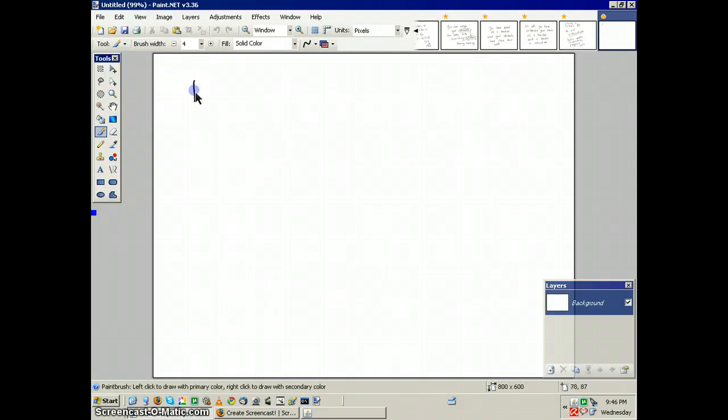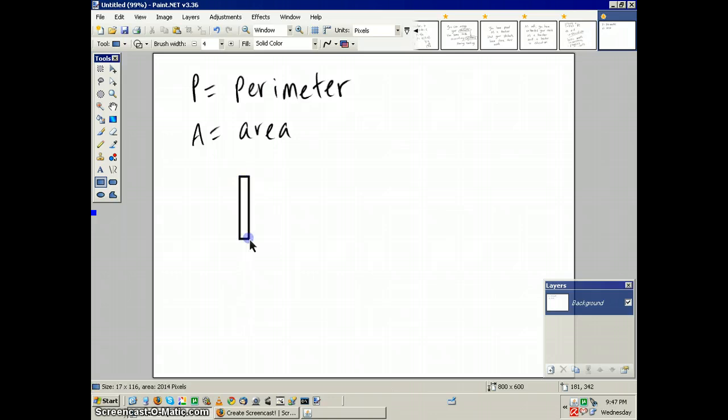So let's do some basic math. We'll do a perimeter, P equals perimeter. We'll do area as well, A equals area. We'll create, using this very basic tool set, a simple rectangle.